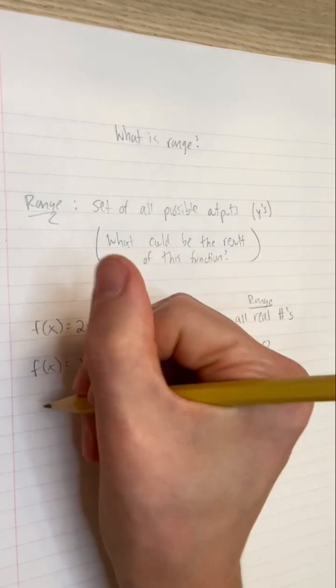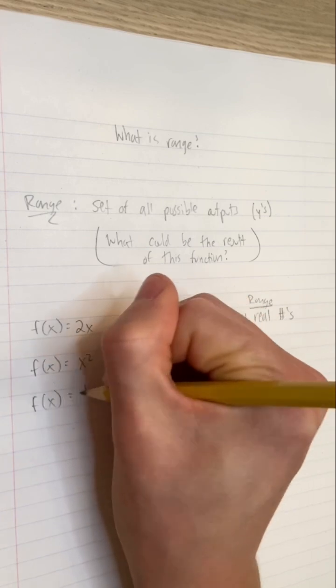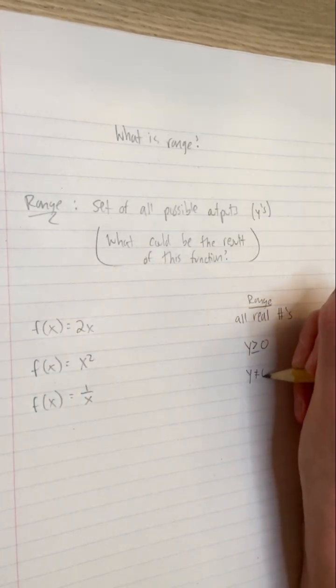If f equals 1 divided by x, the range of f is anything but 0, since there is no number we can divide 1 by to get 0.